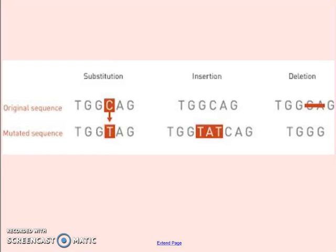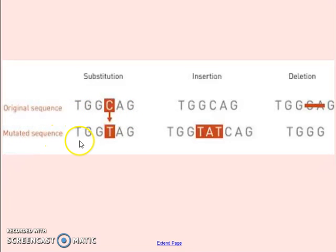The three types of mutations that can occur: if there is substitution, you have your original sequence here as TGGCAG, and then the mutated sequence ends up being TGGTAC. So the C and the T were switched, which is where the substitution comes in — the C is swapped for the T due to the mutation.